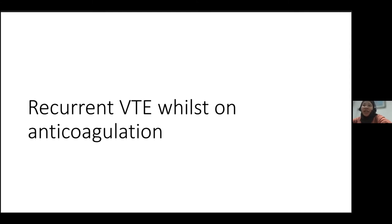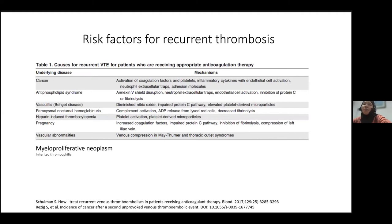Current anticoagulants are really good at reducing the risk of recurrent VTE whilst the patient remains on treatment. Therefore, recurrent VTE is an unusual event and a search for the cause is usually warranted. Common causes include malignancy — the most important — as well as autoimmune conditions like antiphospholipid syndrome, certain vasculitis like Behçet's disease, hematological conditions like paroxysmal nocturnal hemoglobinuria and myeloproliferative neoplasm, pregnancy, and vascular abnormalities causing chronic obstruction of venous flow.